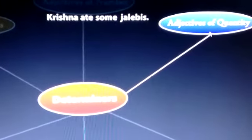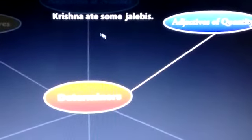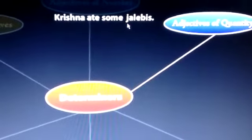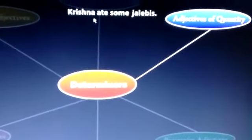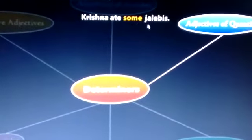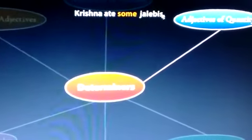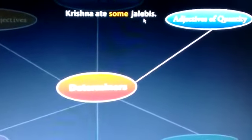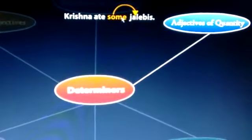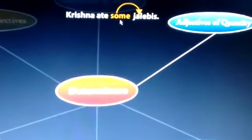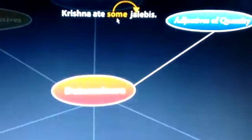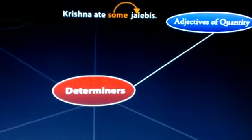Quantity, you know, number. Krishna ate some jalebis. Who ate? Krishna. And how many jalebis she ate? Some. So jalebi is a thing, means noun, and before noun we use some. Some means kuch, kitni? Matlab number of quantity you have to tell. That is called quantifier determiner.